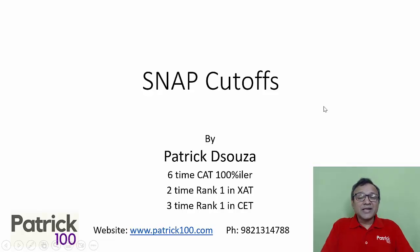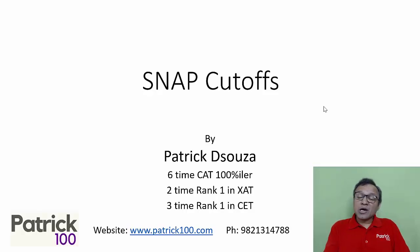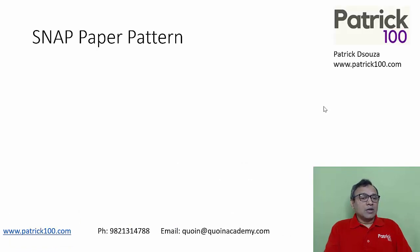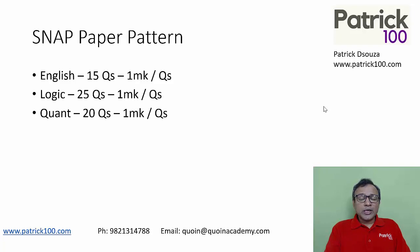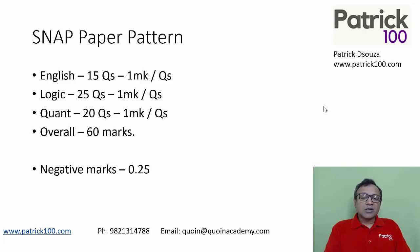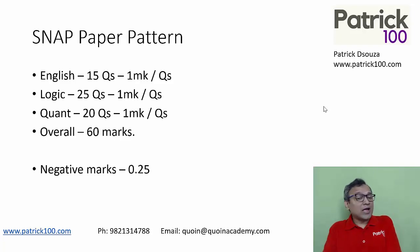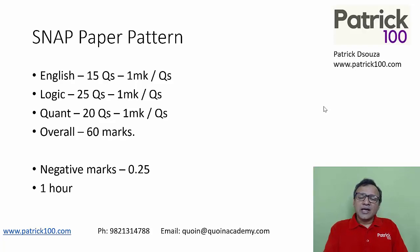Hi, my name is Patrick and this video is to inform you about the SNAP cutoffs. If you look at the SNAP paper pattern, there are 60 questions: 15 English, 25 logic, 20 quant — overall 60 marks. There is negative marking of 0.25, so be careful when marking the answer. It's a one-hour test.